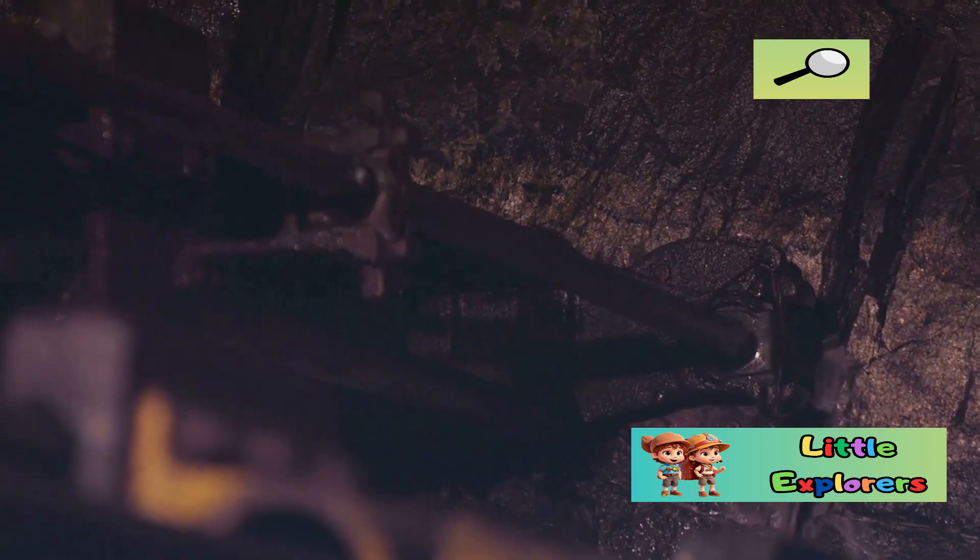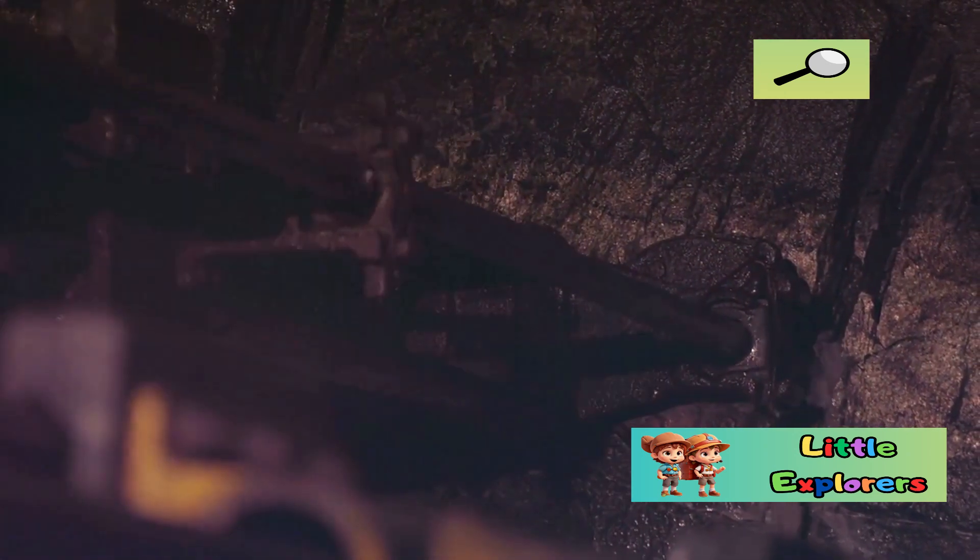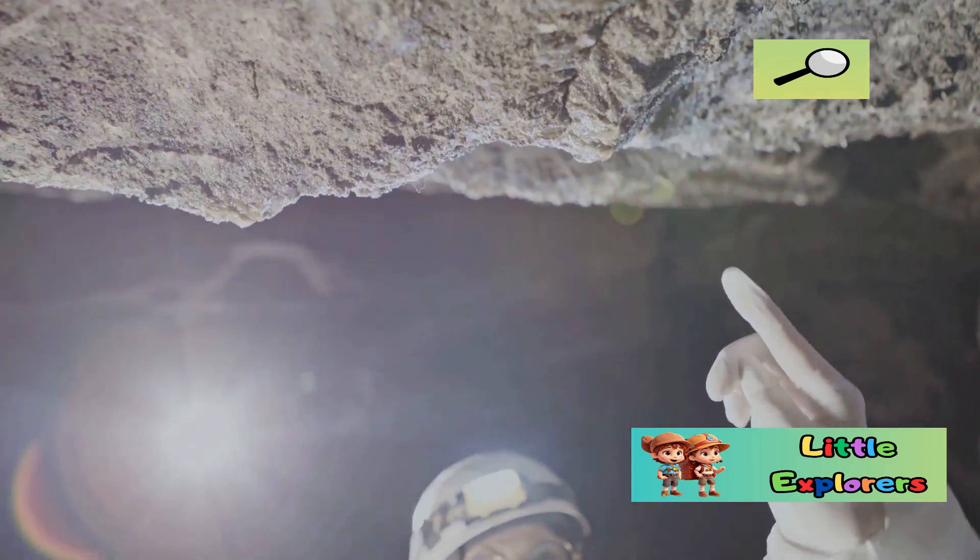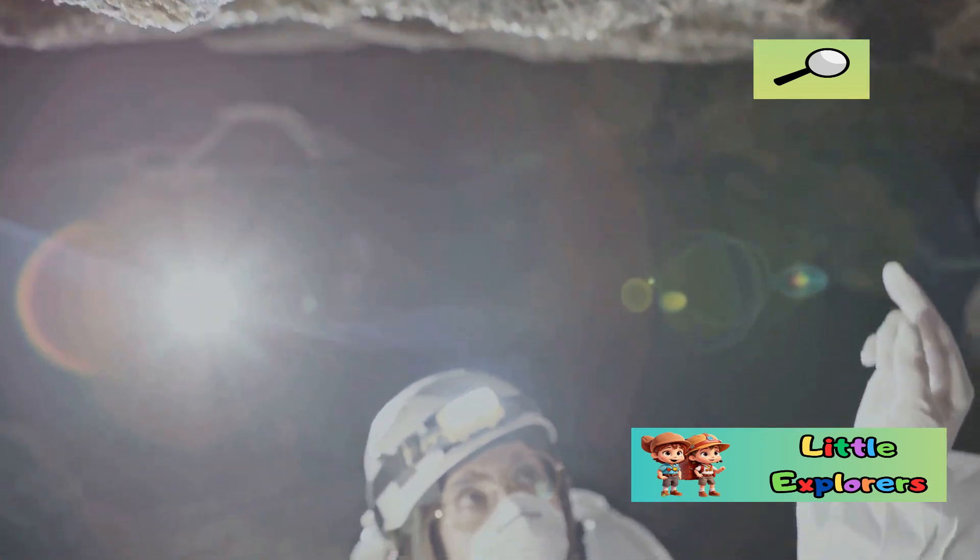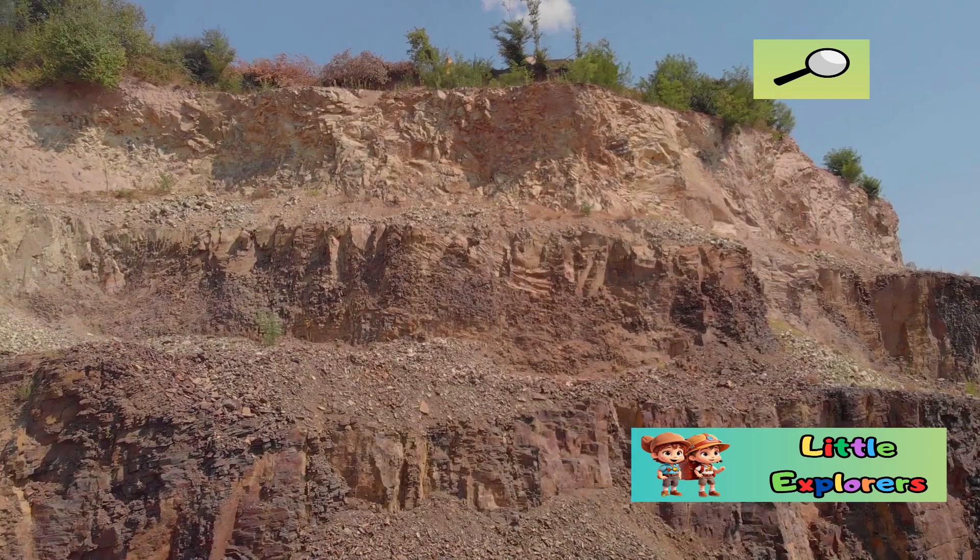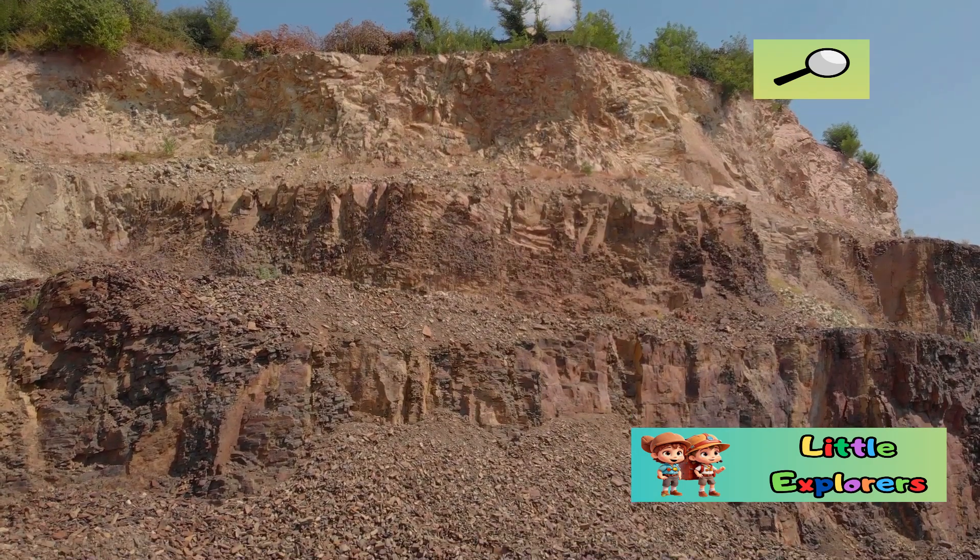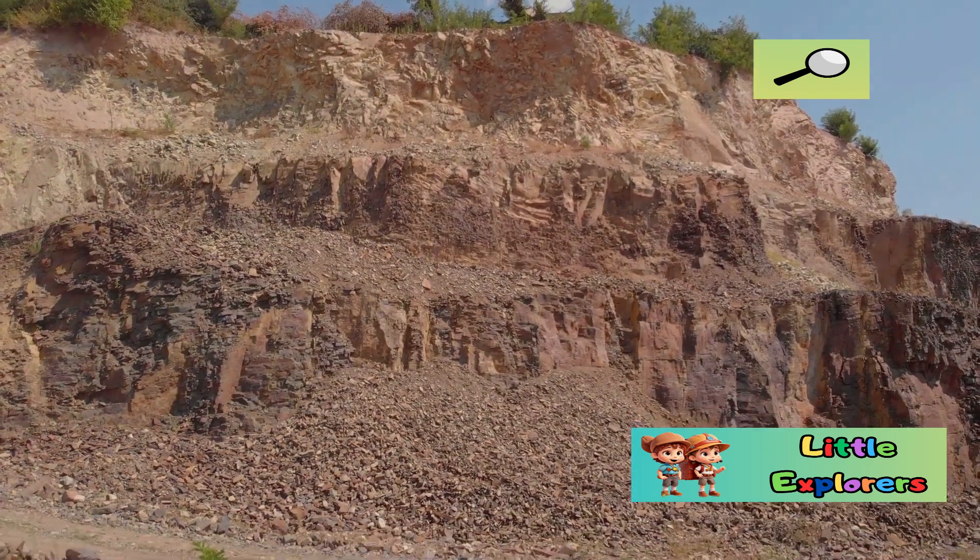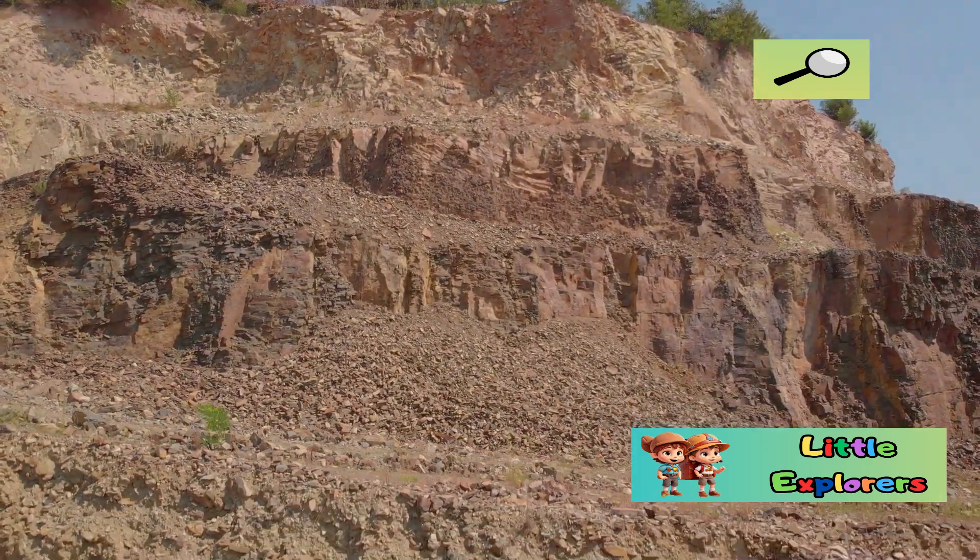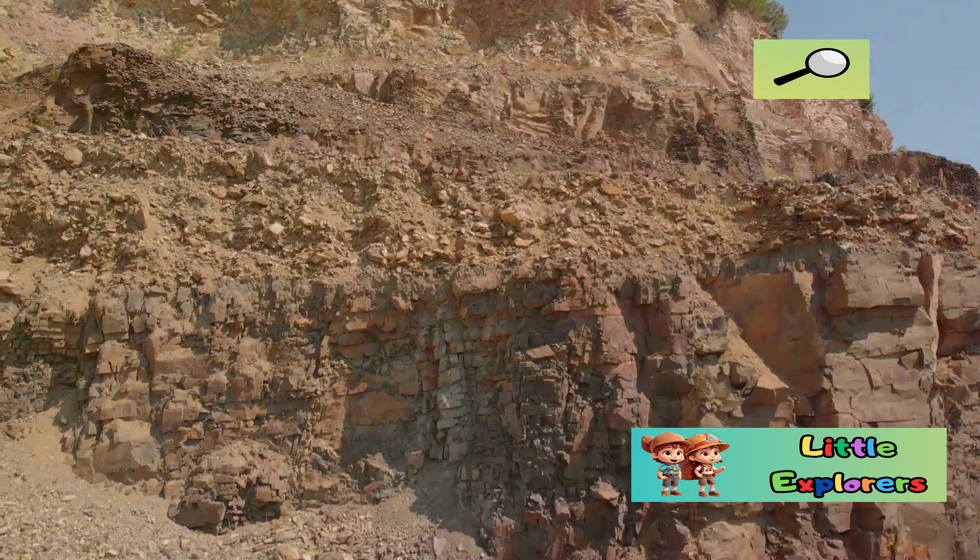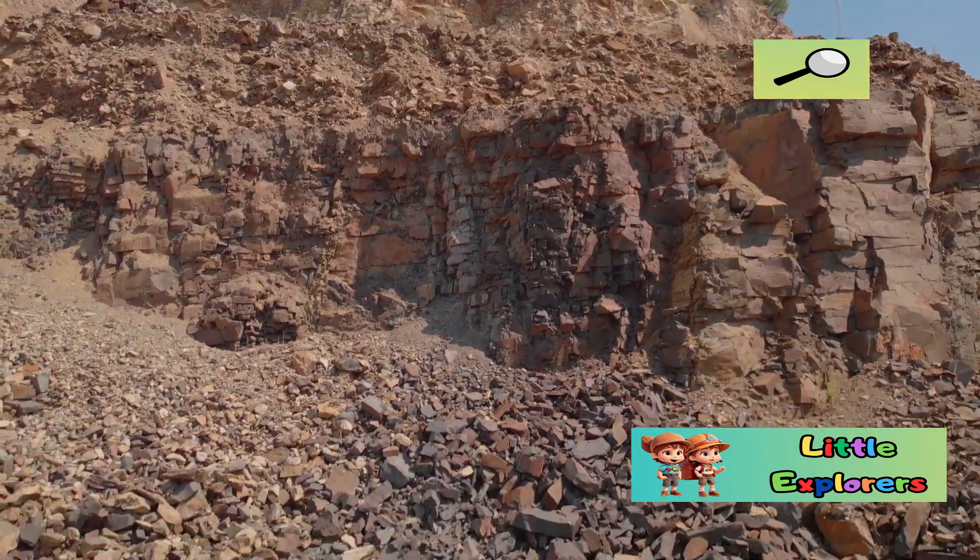Scientists expected to find a continuous layer of granite, a common and well-understood rock type. Granite, known for its durability and widespread presence in the continental crust, was anticipated to extend uniformly at these depths.